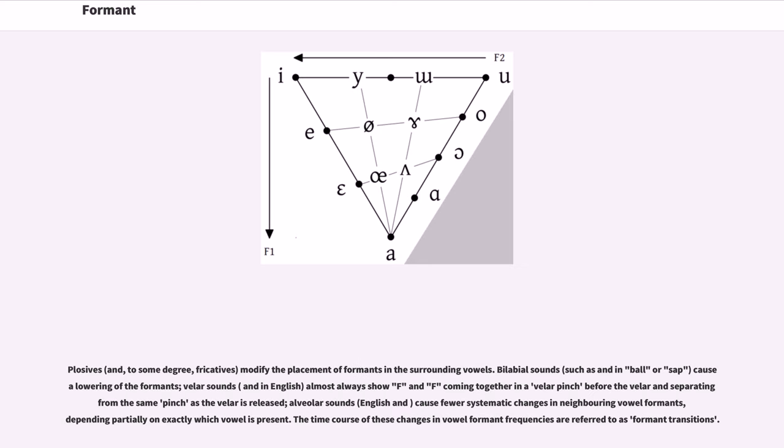Plosives, and to some degree fricatives, modify the placement of formants in the surrounding vowels. Bilabial sounds, such as m, p, or b, cause a lowering of the formants. Velar sounds, k and g in English, almost always show F2 and F3 coming together in a velar pinch before the velar and separating from the same pinch as the velar is released.